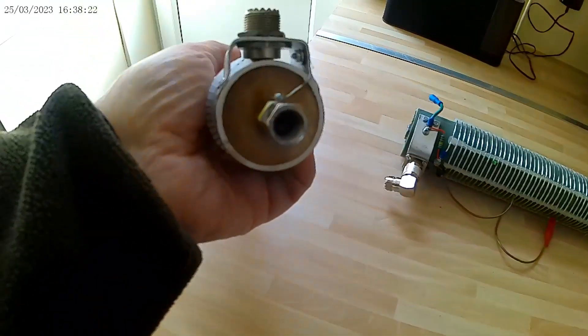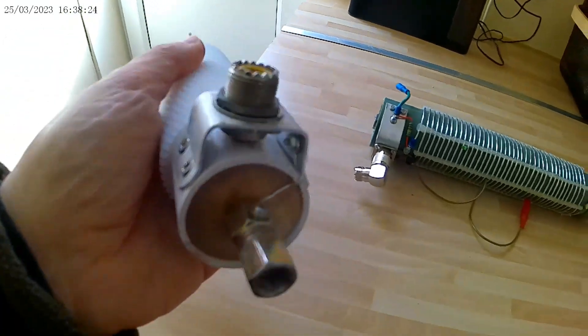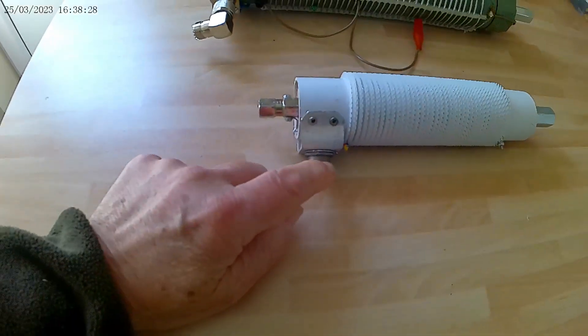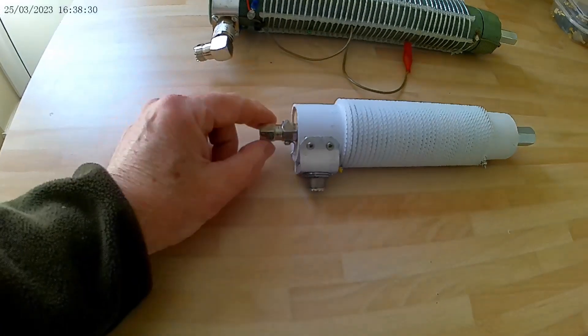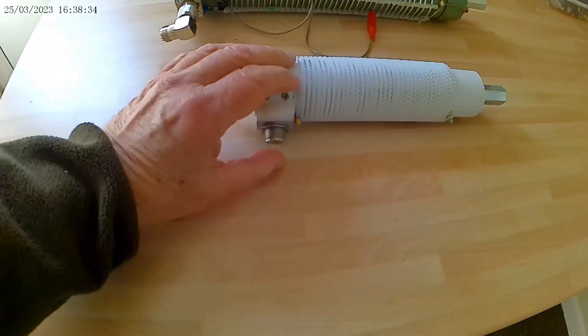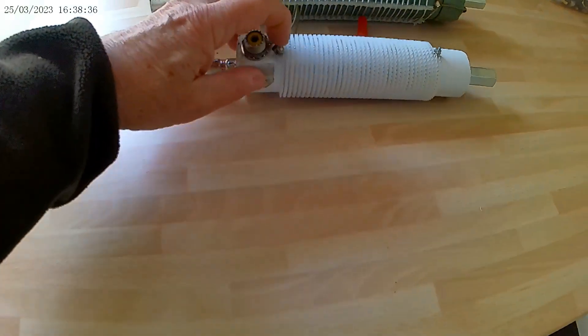So what I've got is an SO239 socket there. The outer thread goes to the counterpoise bracket and the inner goes to this end of the coil.